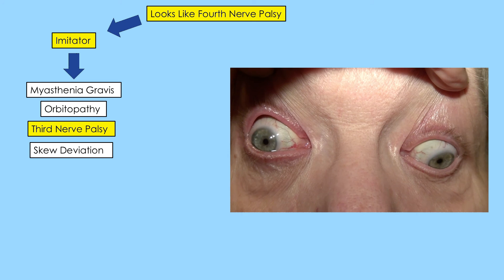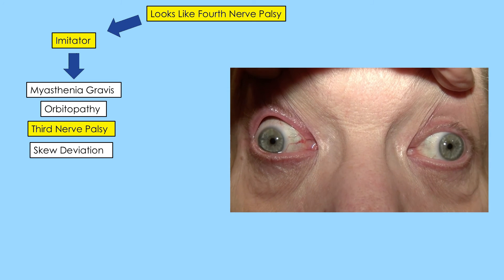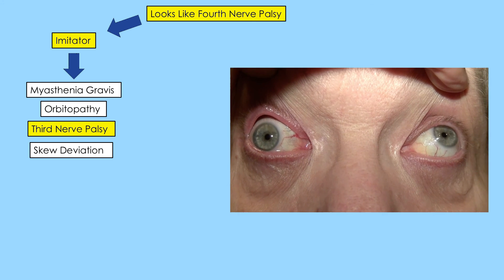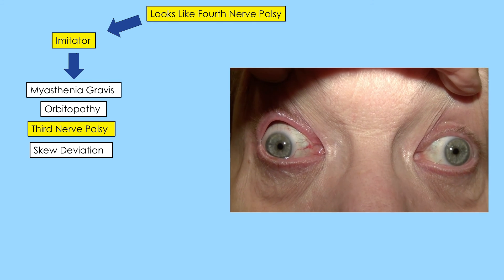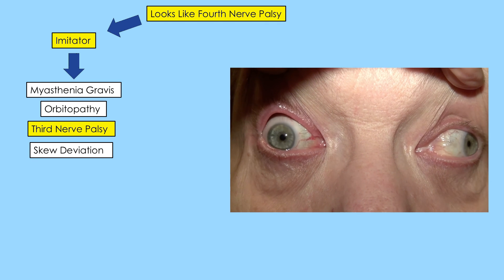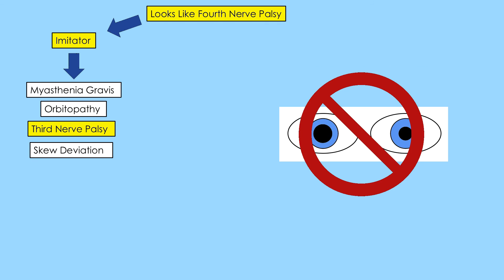Third nerve palsy can look like fourth nerve palsy, especially if the major misalignment is in the vertical plane. But that misalignment will not fulfill the cardinal features of a fourth nerve palsy. Also, ptosis and pupillary abnormalities would not occur in fourth nerve palsy.